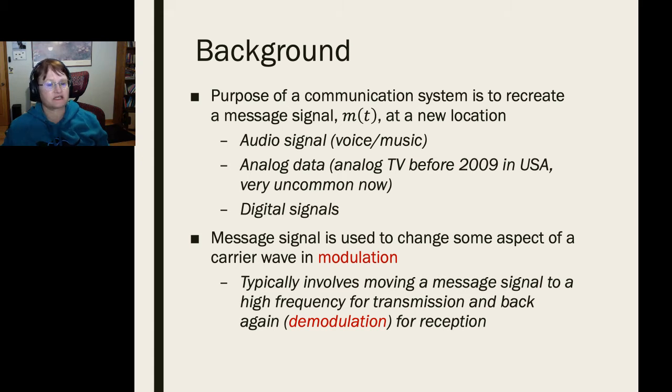When we have a message signal, what we do to transmit it is to change some aspect of a carrier wave. This is called modulation. The kinds of things that we will be changing will be amplitude, frequency, and phase of the signal. The other part of the communication system is demodulation, where we take that message signal and decode it for reception and use at the other end.